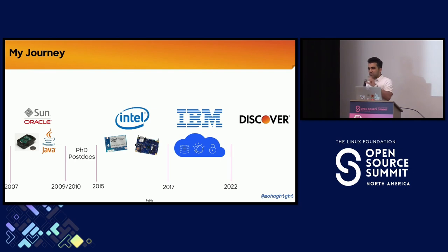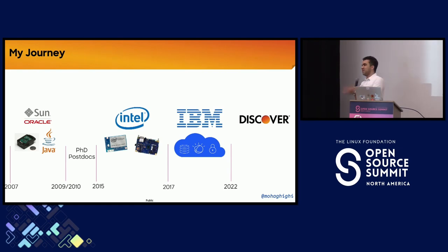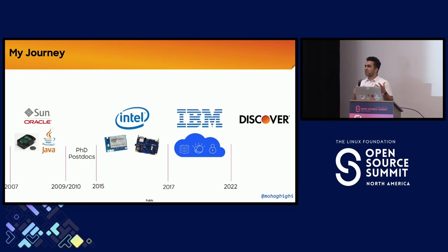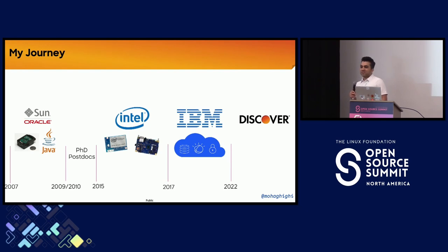At Sun, I had the opportunity to program small sensor devices — what we call IoT today — with Java. I tinkered with all the telecommunication properties in them, and that inspired me to carry on my academic journey into a PhD and a couple of postdocs. Then I joined Intel to embed machine learning into smart objects connected to cloud services, getting into smart city and smart healthcare applications. Later I led developer advocacy in Europe, Middle East and Africa for IBM's hybrid cloud. And right now I'm at Discover, leveraging my tech expertise to drive innovation in the financial sector.